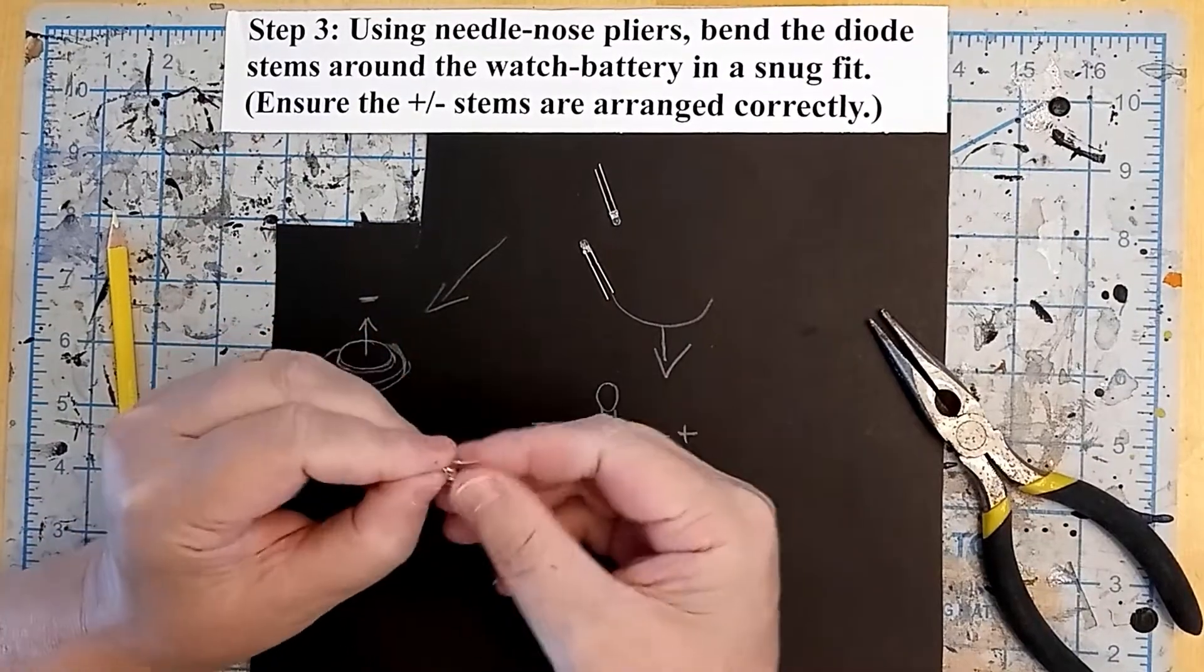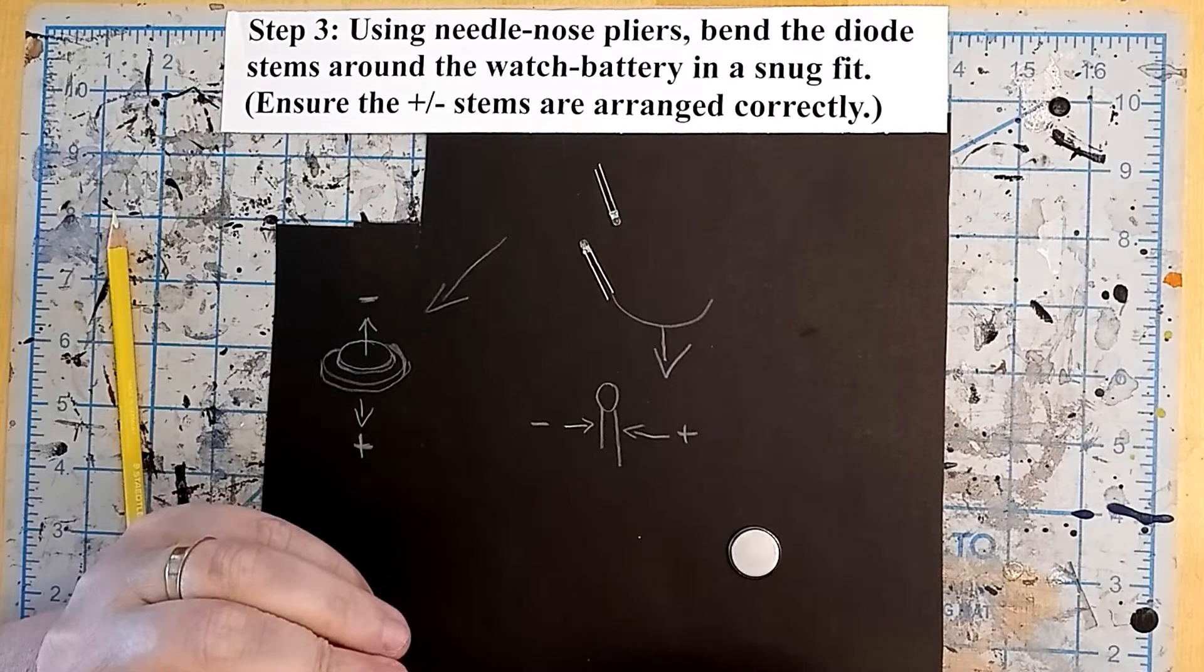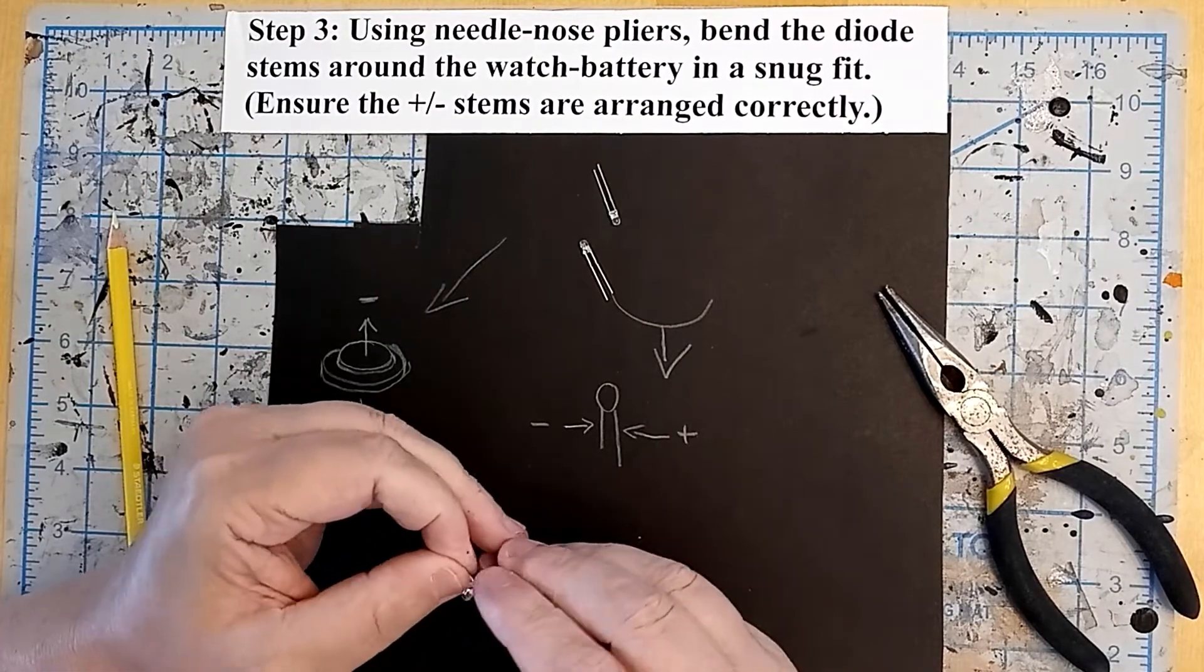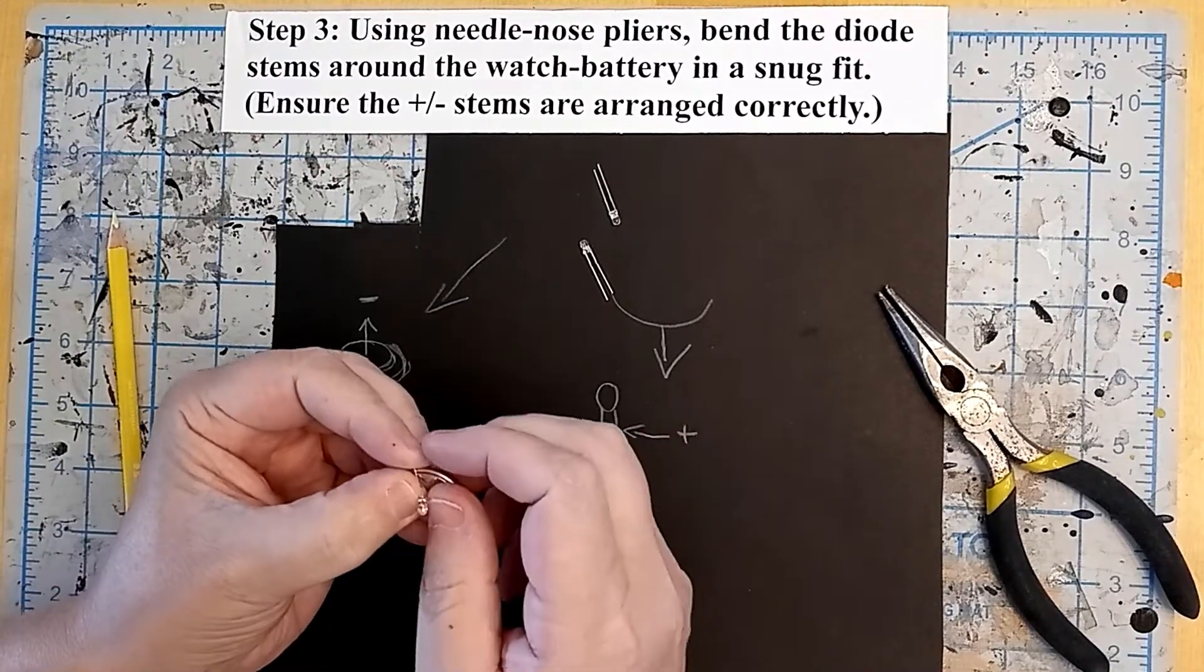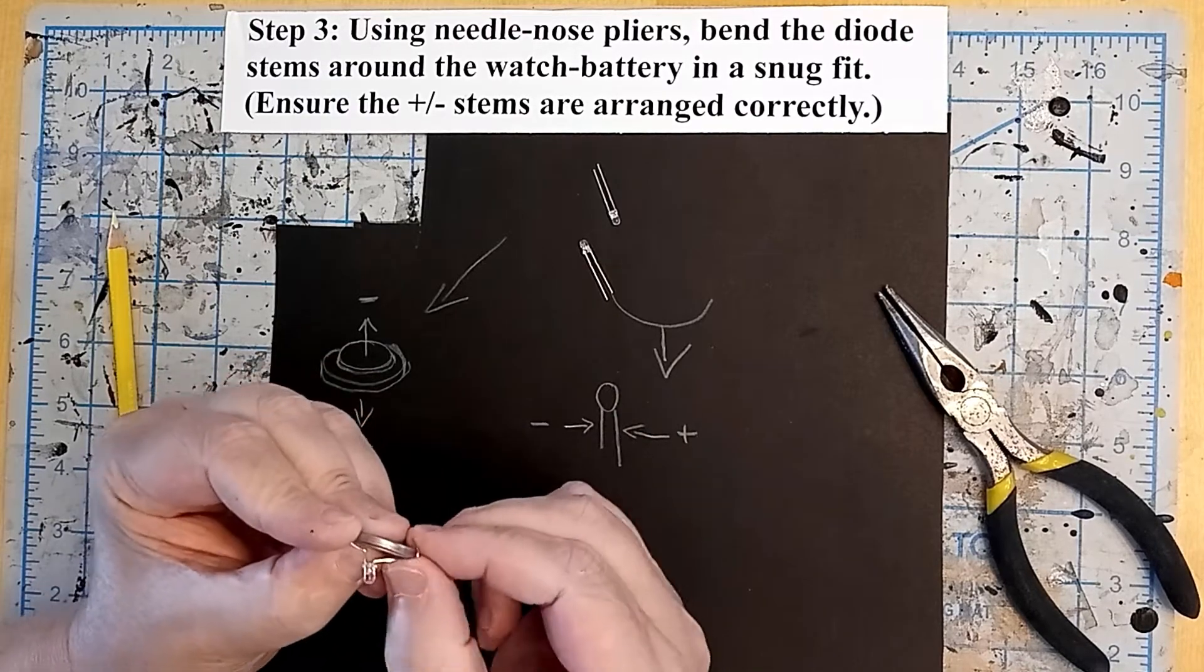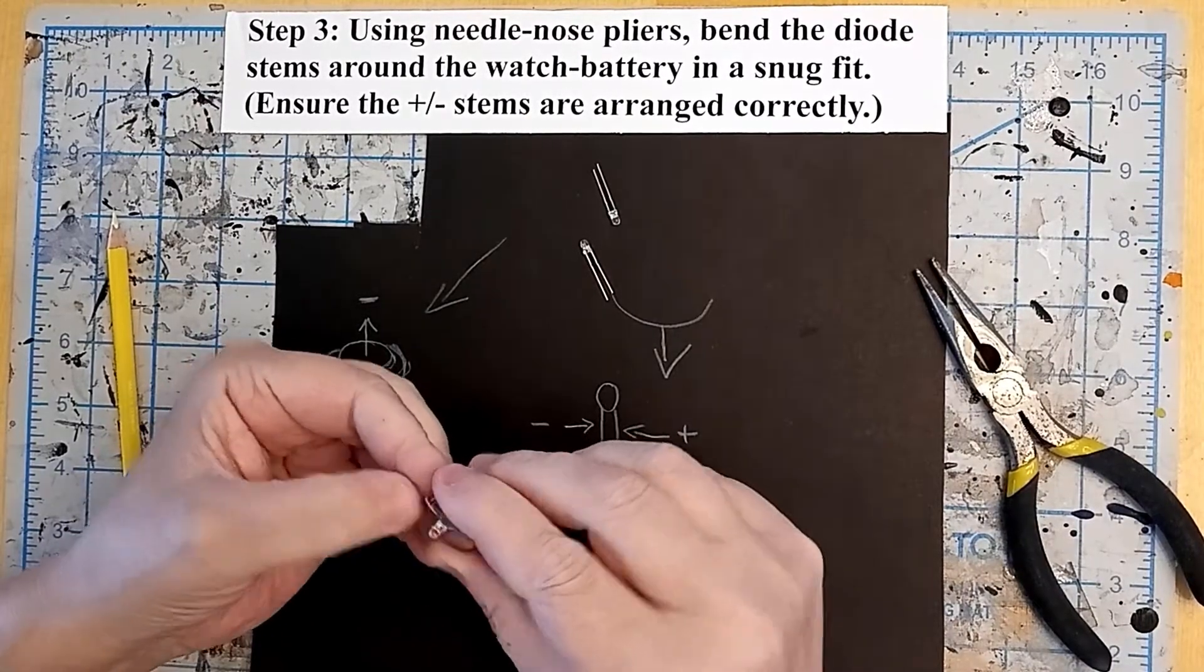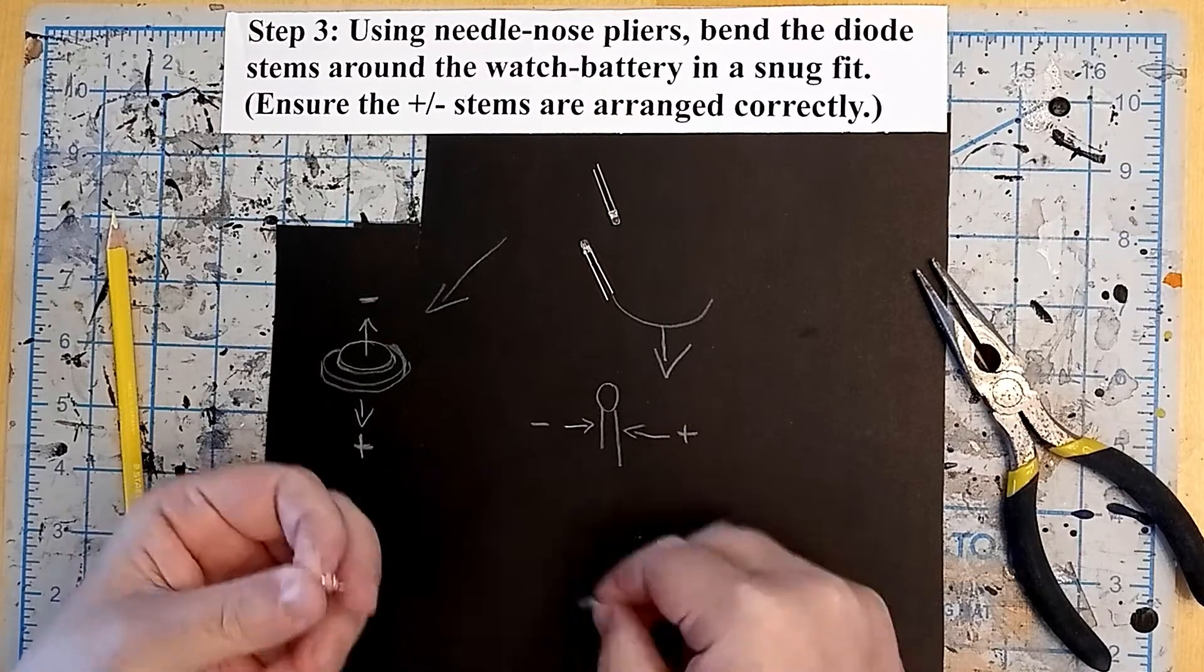I'm just using my needle nose pliers to make sharp corners in these bends. I'm test fitting them on the battery as I go just to make sure everything's going the way I want it to. I'm using my thumb to bend this around and I'll use my needle nose pliers to clamp that bend tight around the battery, not too tight just firm. That's what I'm looking for, nice fit. So I'll take that one off and I'll do it with my other two diodes.